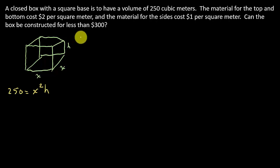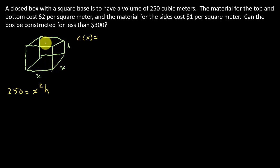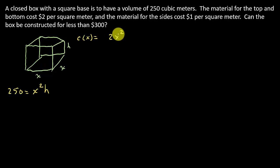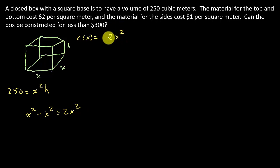So C(x) equals... the cost for the top and bottom is $2 per square meter, so I need the area of the bottom and the area of the top. The area of the bottom is X squared and the area of the top is X squared, so there are two of them — that's 2X². This is square meters because it's area, and it costs $2 per square meter, so I multiply by 2.